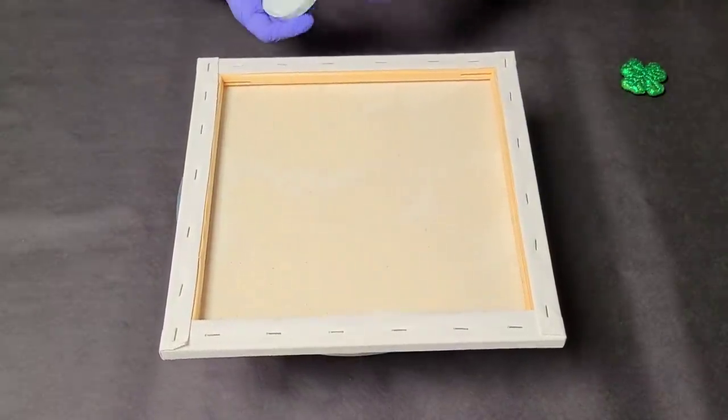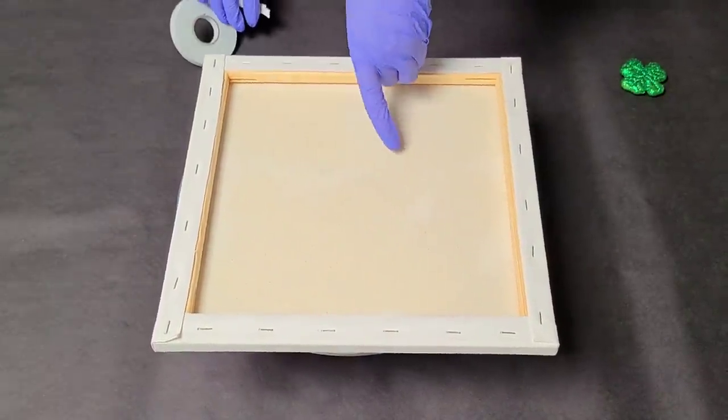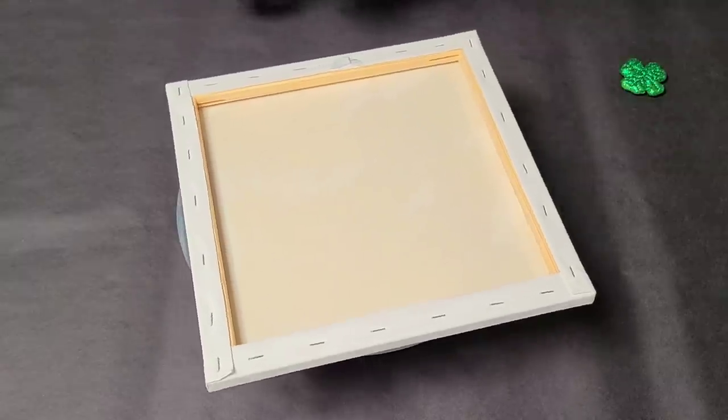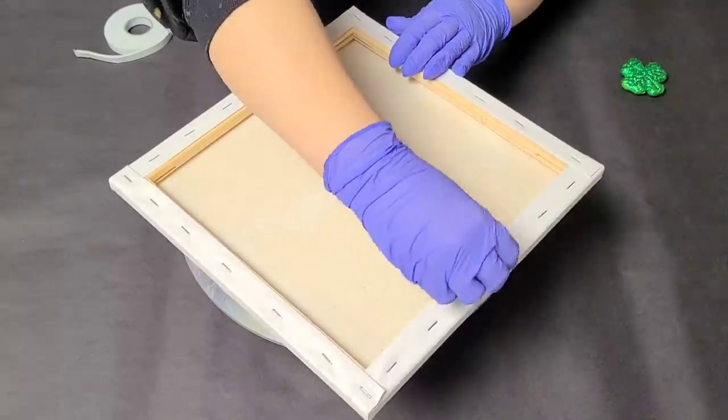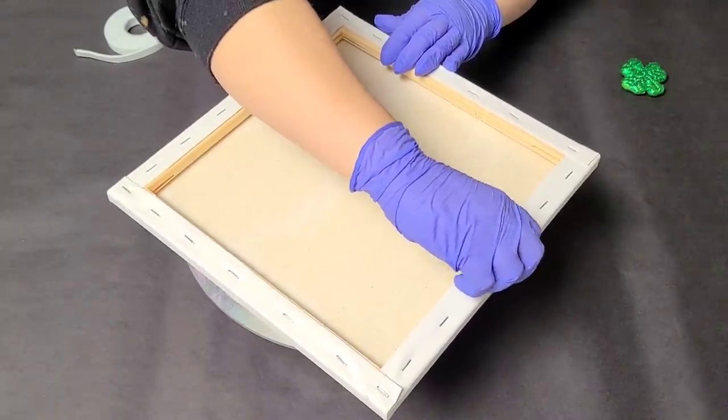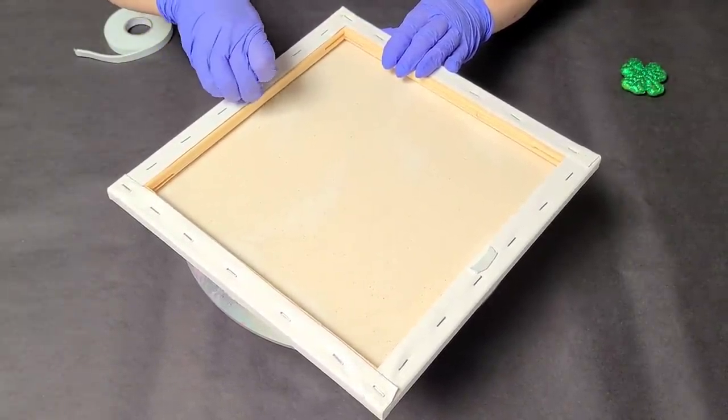So to start with I'm going to take some double-sided sticky tape and tape the canvas lightly down to the spinner. It doesn't take a lot, just probably two small pieces and I do have a shower cap over the top of my spinner. That's to protect it.